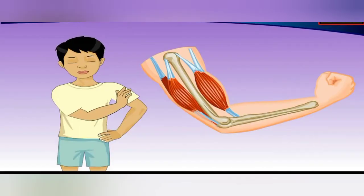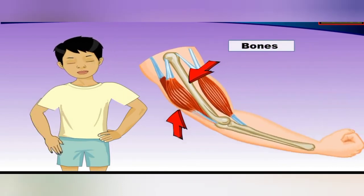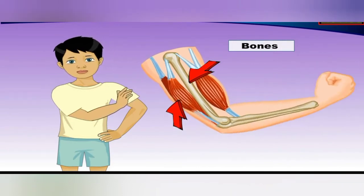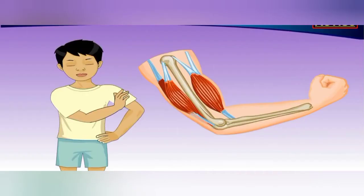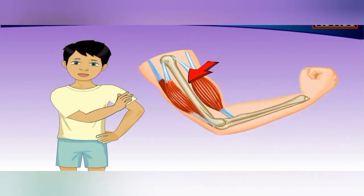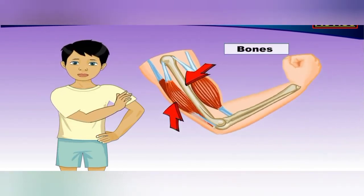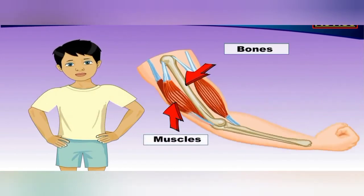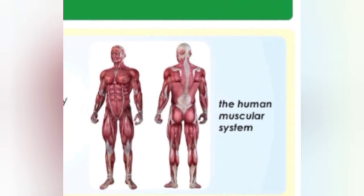Touch your palm with your other hand. Can you feel a soft and spongy material inside? Now while still touching it, slowly unfold your arm. Can you feel some movement inside the upper arm? This moving soft thing you felt is what we call muscles. Our body has hundreds of muscles, and together they are called the muscular system. Mark the definition and let's move ahead.